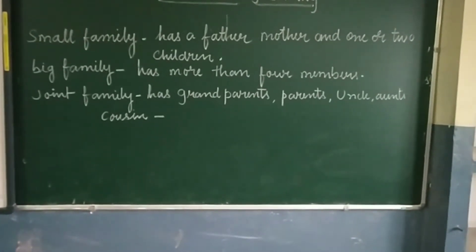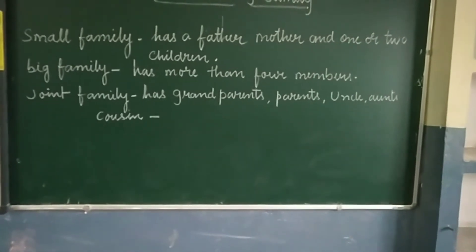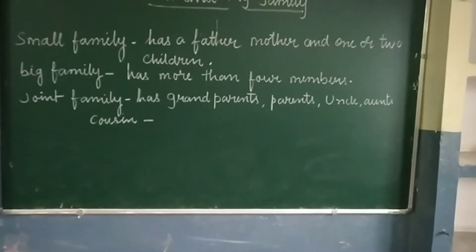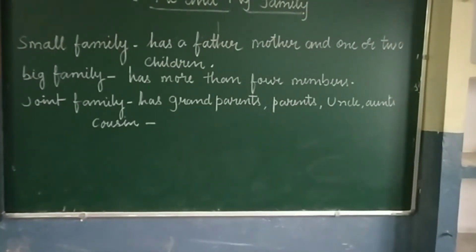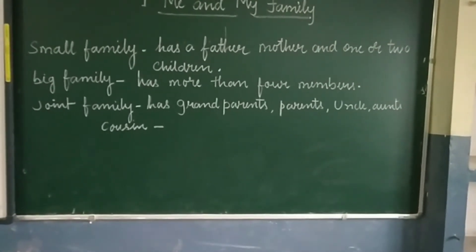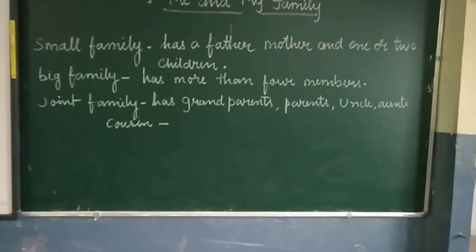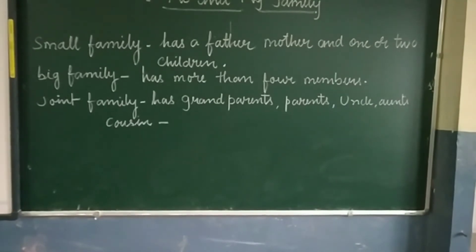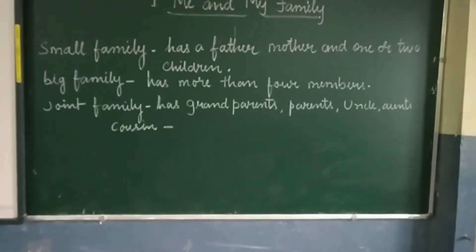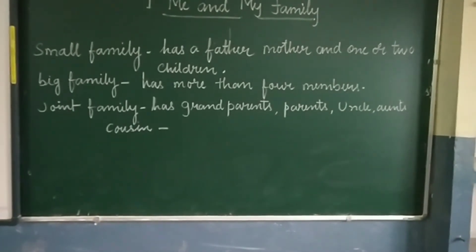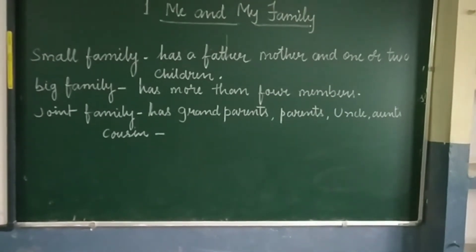A joint family has grandparents, parents, uncle, aunts, and cousins all living together. Every family has a surname, which is also called a last name. Whoever belongs to a family uses that family's surname, and all members of the same family share the same surname.